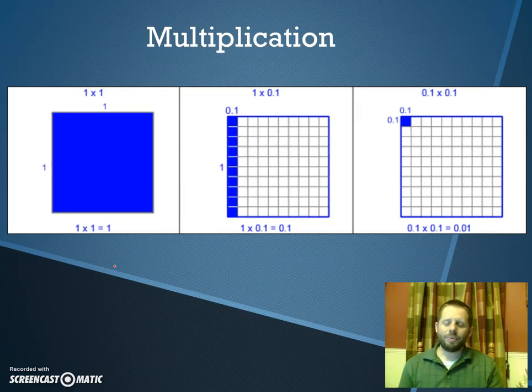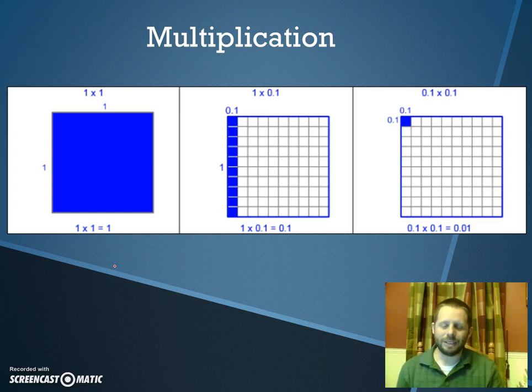One way to model multiplication of decimals is by using decimal grids, and that's what this is showing. Some of you may be looking at that and saying, oh, that kind of looks like the flat in my base 10 blocks. It is the same manipulative, just changing what the value of that flat is equal to. In the past, the flat was equal to 100, but here we're saying that the flat represents one whole.